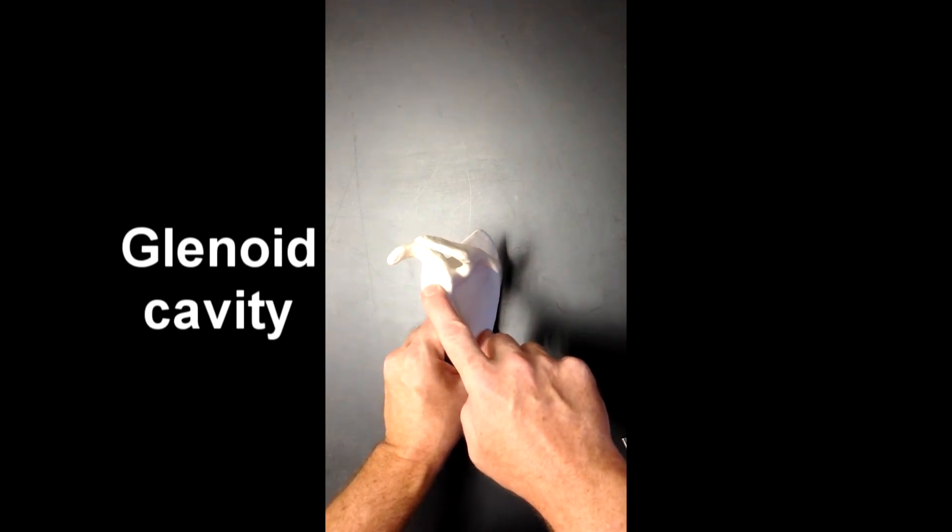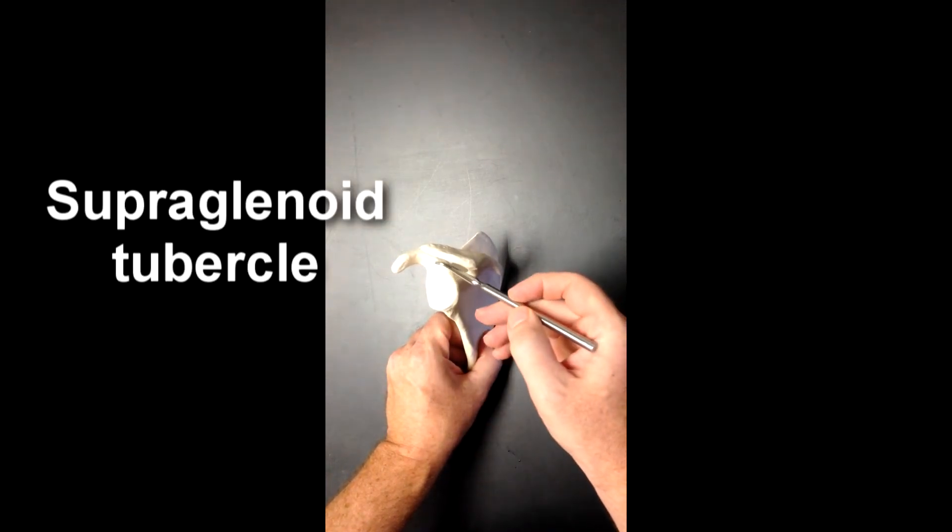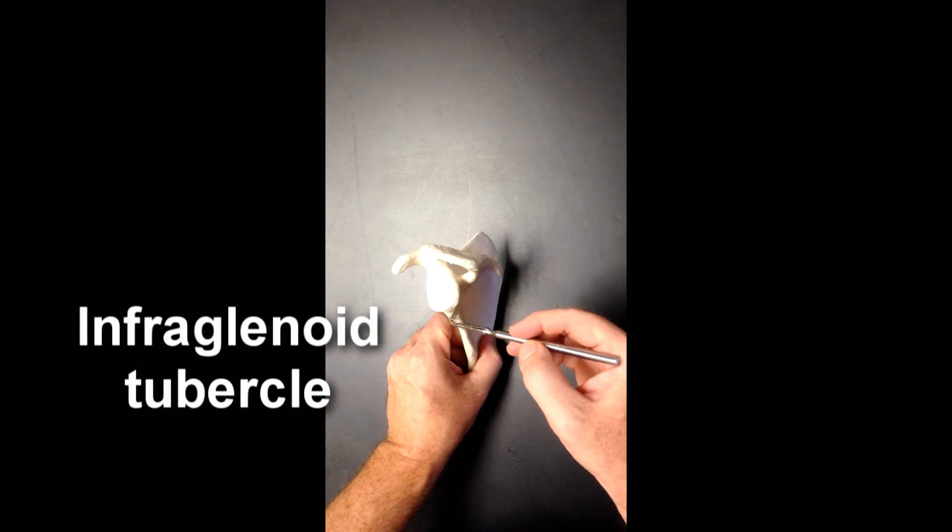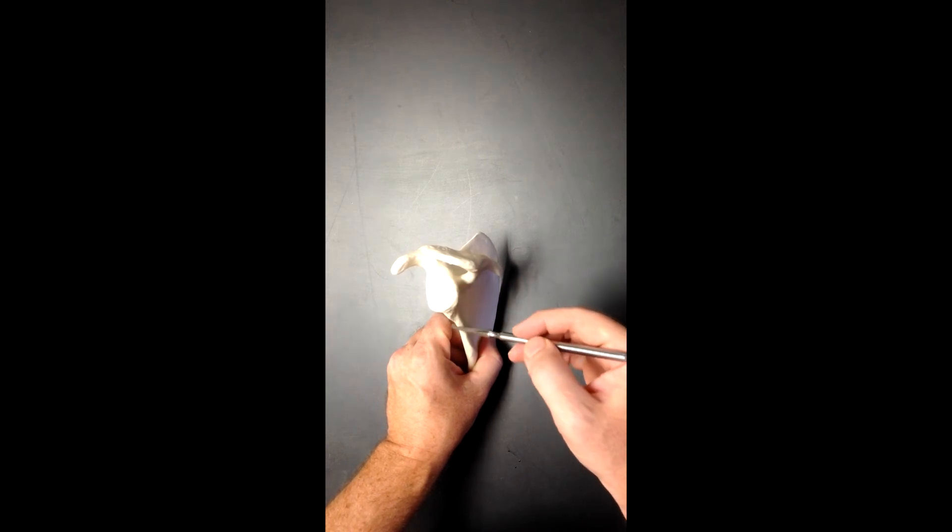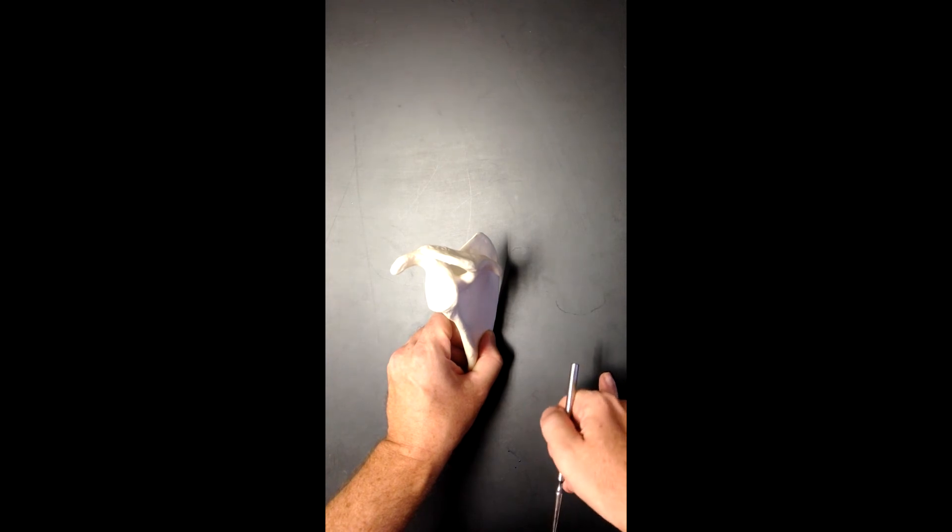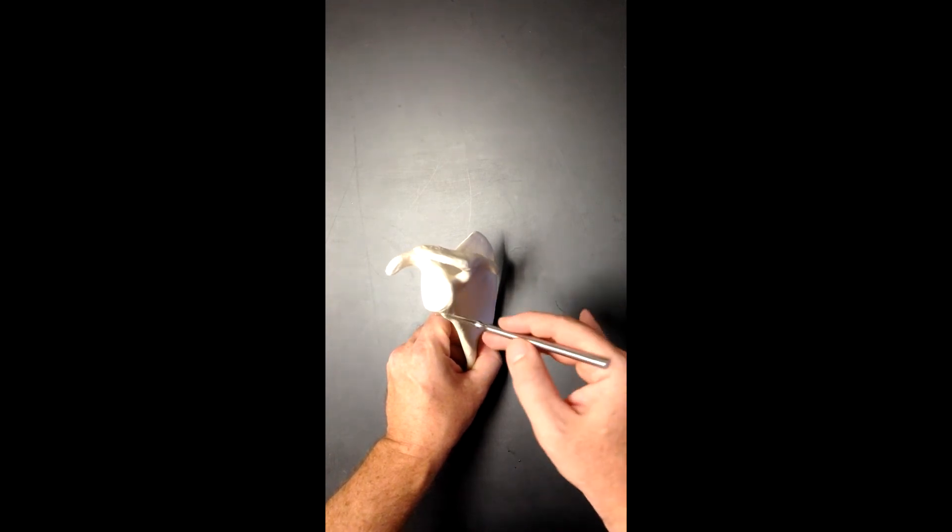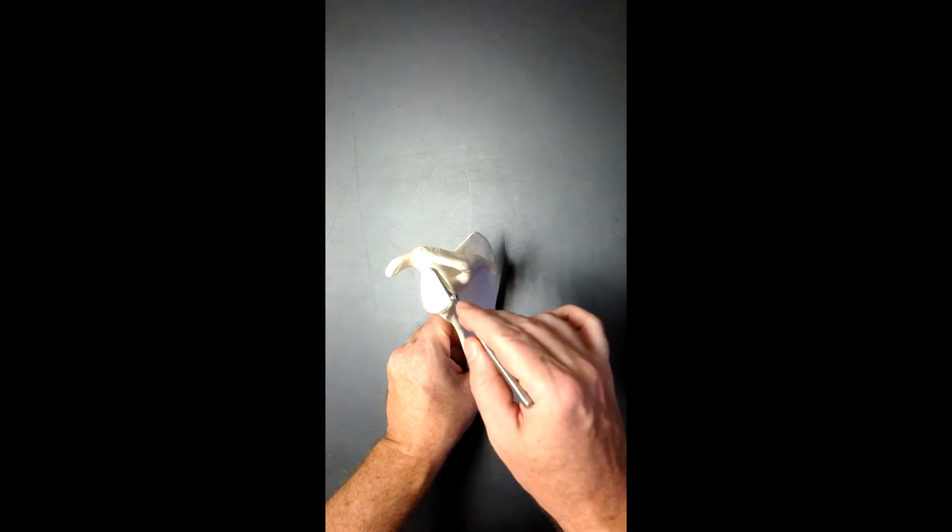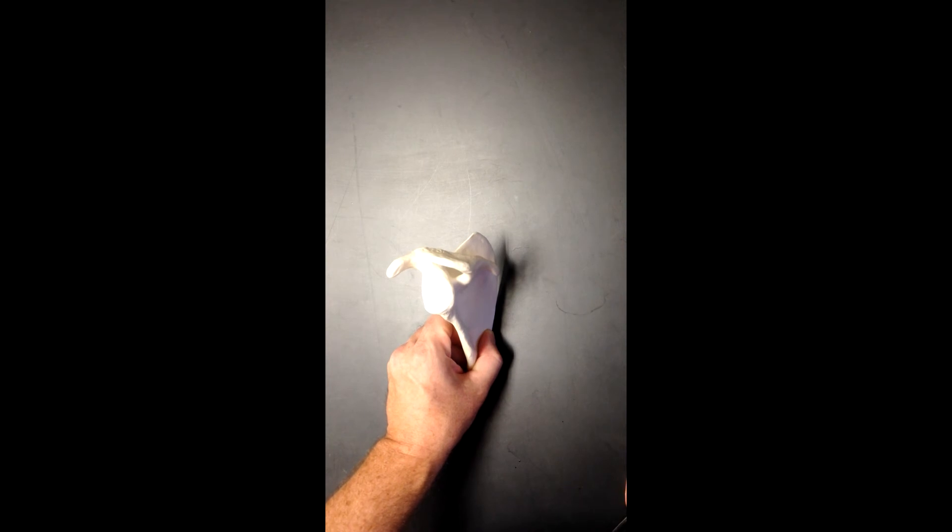We have our glenoid cavity, or glenoid fossa. We have the supraglenoid tubercle, which would be right here. An infraglenoid tubercle, we would see down here. These would be sites for muscular attachment, when you study the muscles. The long head of the tricep would attach here at this infraglenoid tubercle. And up here at the supraglenoid tubercle, we would have one of the heads of the biceps brachii, specifically the long head of the bicep attaching there.